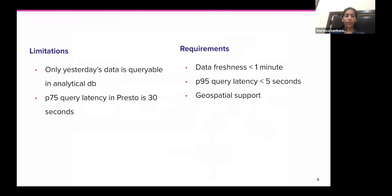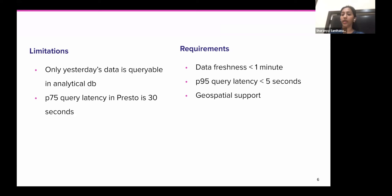The problem with this was there was a lag in data freshness. Our users - engineers, data scientists, and data engineers - were not able to query the most latest data. There was almost a 12-hour lag. Secondly, even though Presto is a really powerful query engine, the P75 is around 30 seconds. That might work well for engineers, but not for someone in operations who wants to run interactive queries quickly back to back. These limitations drove us to look for solutions that would give us data freshness less than a minute, with built-in geospatial support and P95 of less than five seconds.